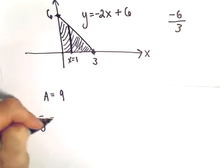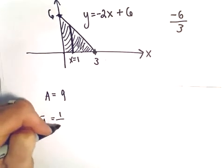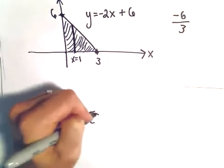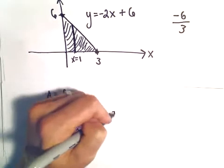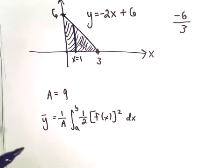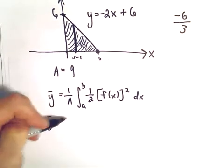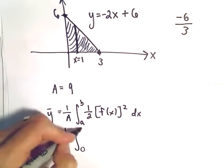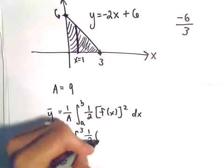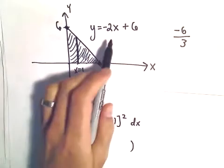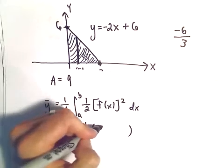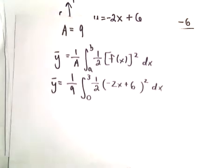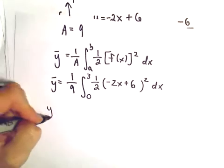Now to figure out y-bar, we'll use our formula: 1 over the area, the integral from a to b of 1/2[f(x)]² dx. So we'll have 1/9, the integral from 0 to 3 of 1/2 times our function (-2x + 6) squared. I'm going to pull the 1/2 out front.